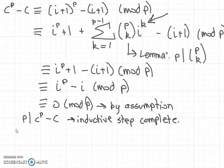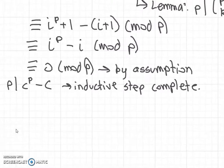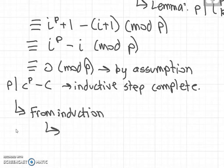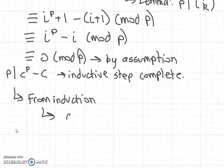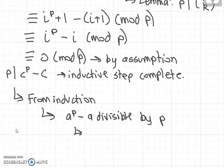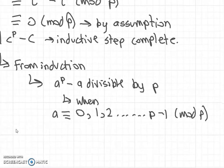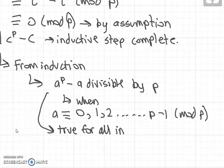So from induction, we get a^p minus a is divisible by p, and it works for all possible values of a mod p, from 0, 1, 2, up to p minus 1. This is the same as saying this is true for all integers a.